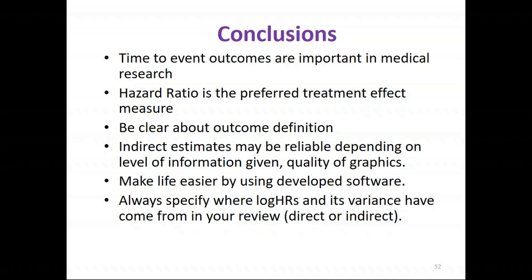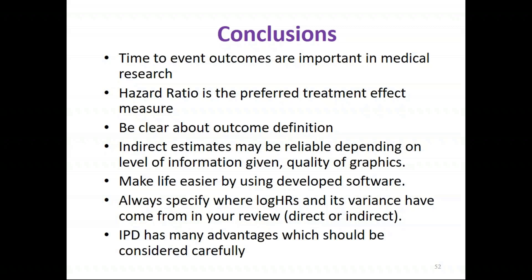If you have used these indirect methods, it's important to specify this when discussing the results so that the reader can understand if all of the estimates have been obtained by extracting data from Kaplan-Meier curves — there is obviously more uncertainty about the reliability of those estimates. Finally, individual patient data does have many advantages, and this is particularly true for time to event outcomes, as it overcomes some of the problems with quality of reporting which can hinder meta-analysis of aggregate data.